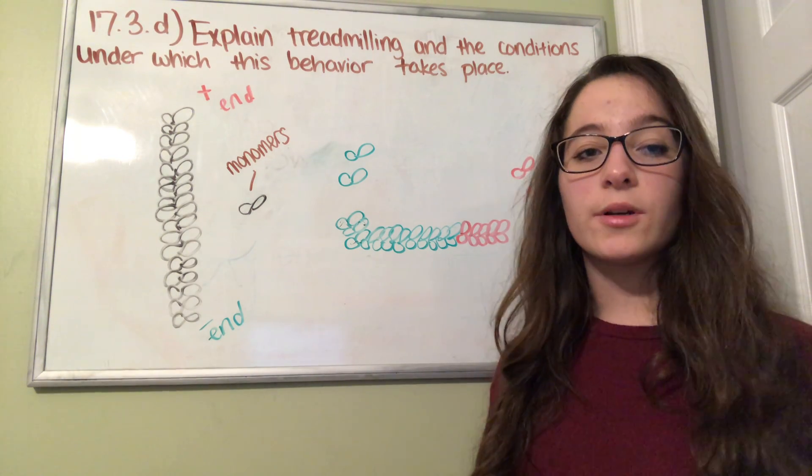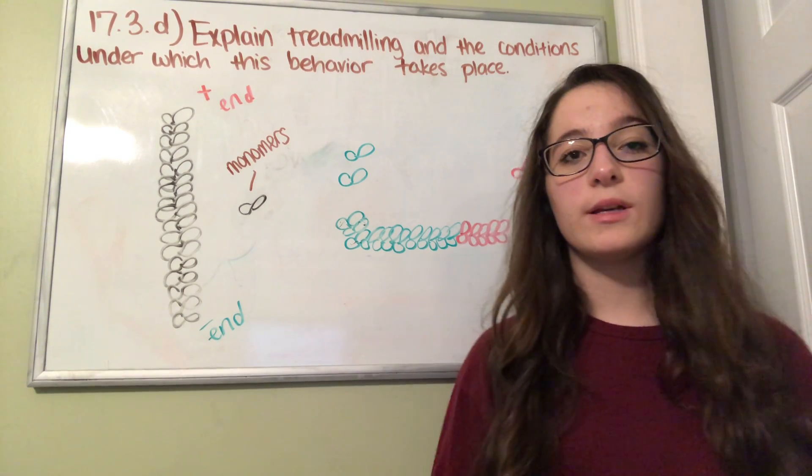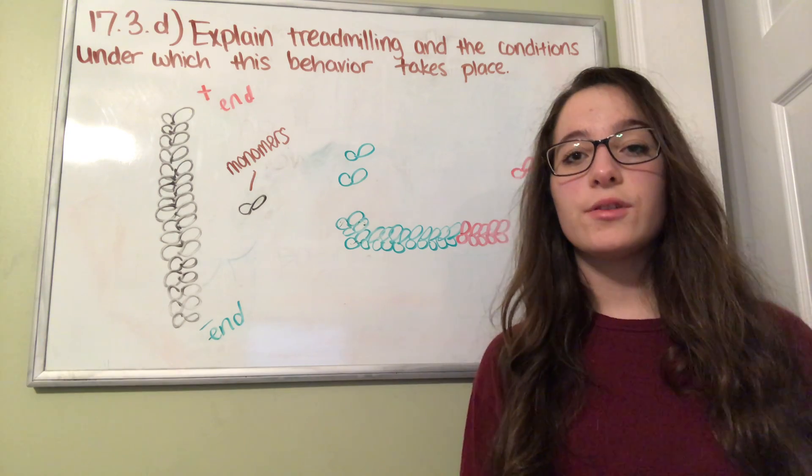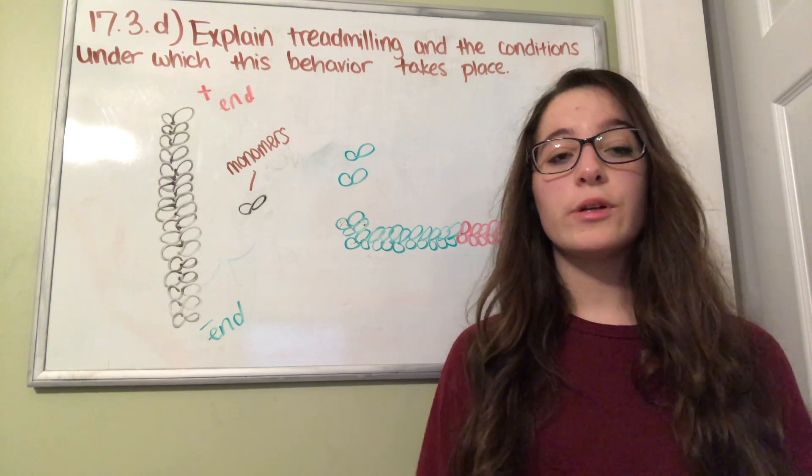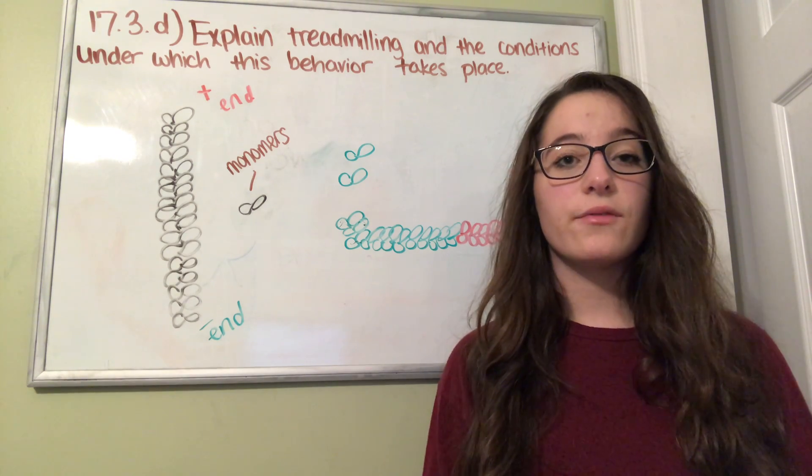Each actin monomer is tightly bound to ATP. Once they're added to a growing filament, their ATP is hydrolyzed to ADP. This reduces the strength of the bond between monomers, which in turn causes the ADP-bound ones to more readily dissociate from the filament.